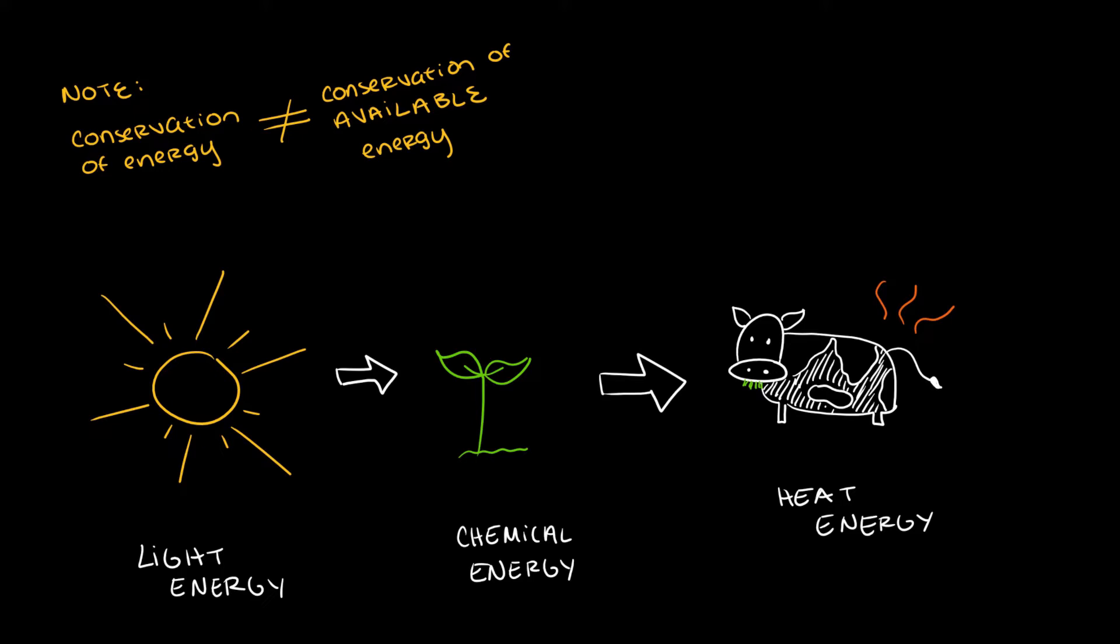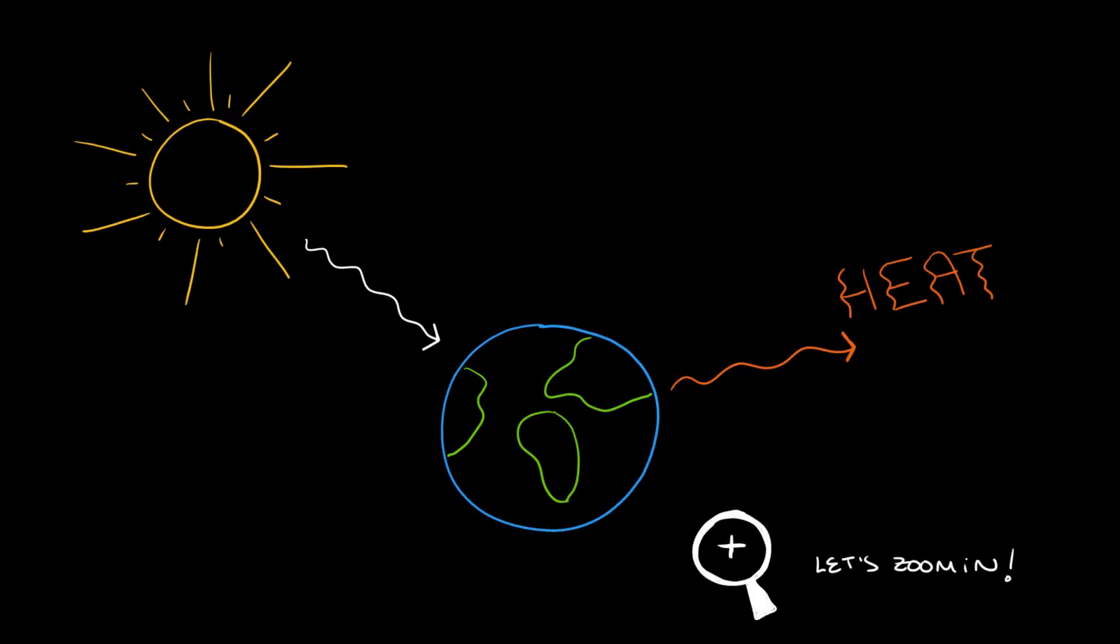As plants transform and store solar energy into sugars, and then we eat the plants for nutrients and energy, the metabolism of those sugars releases heat, which is the least ordered form of energy. On a macroscopic scale, solar energy enters the Earth and heat leaves the Earth. Let's zoom into the processes that happen on the Earth for this energy conversion to happen.